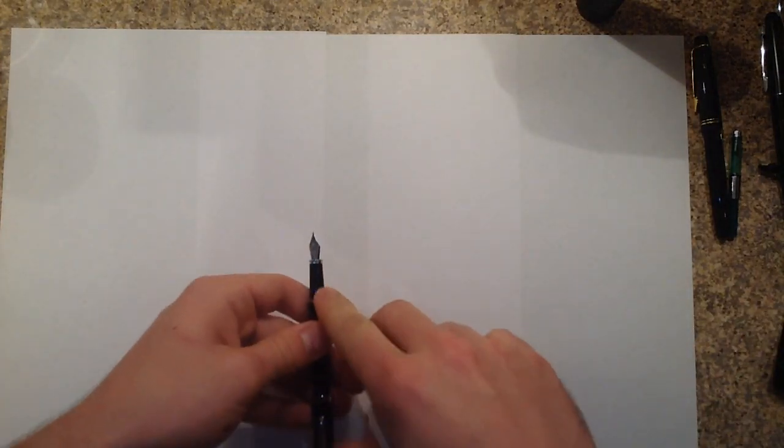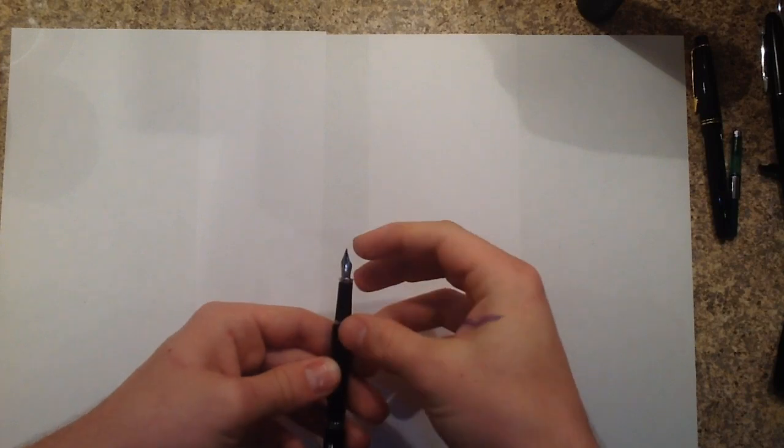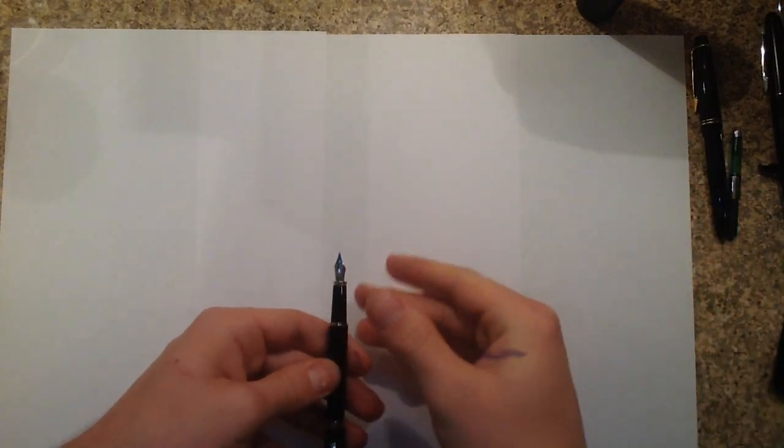The nib that it comes with is just a standard IPG nib. Nothing fancy about it. Can we get it in there? Focus. Oh, you can see. Iridium Point, Germany. It won't focus that close. But that's all it says. There's no size marking on it. It's definitely not a German nib. The tipping has to be German for it to be marked Iridium Point, Germany. But that's all that has to be German.